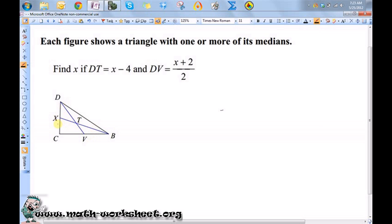Here I have a triangle with two of its medians represented, which means that I know that this point here, where the two medians intersect, is the centroid.